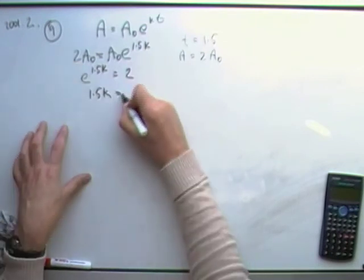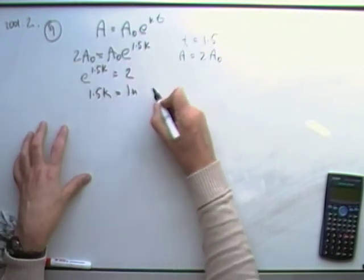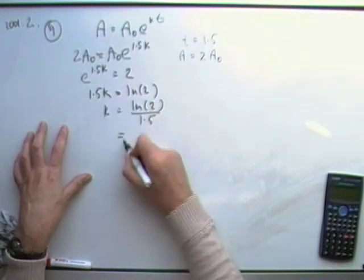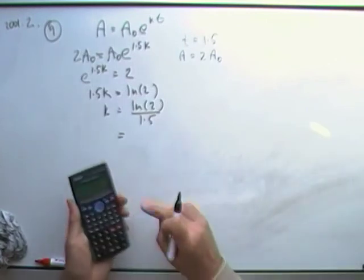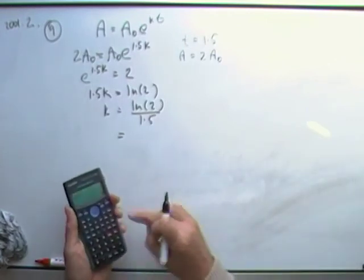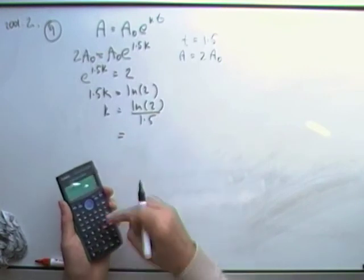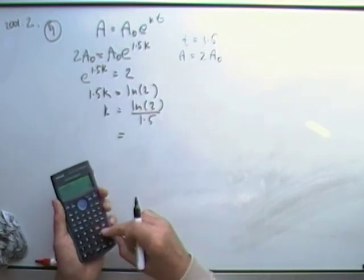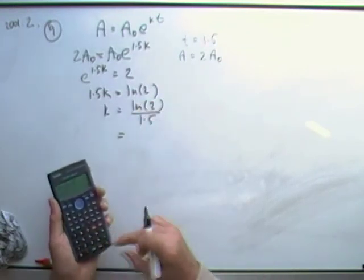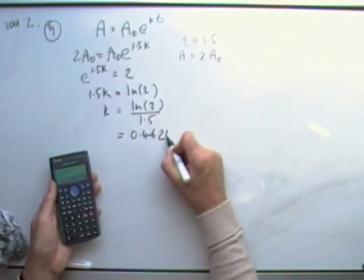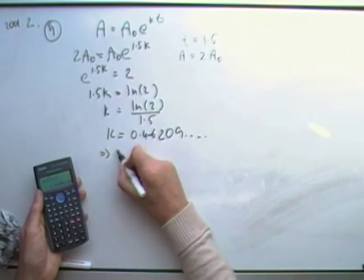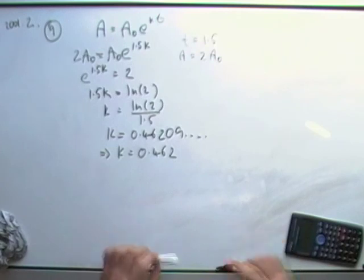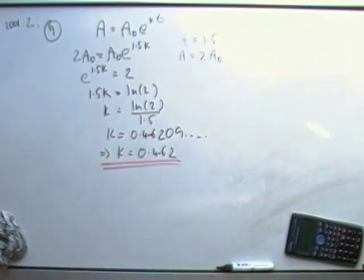Next thing get rid of that. e to the power. That will be log base e. Or you could just write ln. ln of 2. So k is quite simply going to be ln of 2 divided by 1.5. Press the buttons. And then there you are. So ln, ln being the natural logarithm. Log base e of 2. Don't forget to close that bracket before you divide. That division will happen in here before the log takes effect. Divided by 1.5. And there you are. 0.46209 and so on. I didn't specify anything but accuracy. So I'll just go for 3 significant figures. k would be 0.462. That's that question.